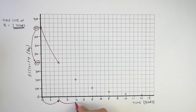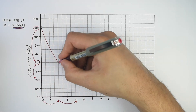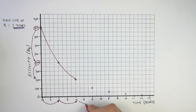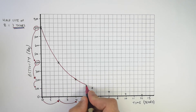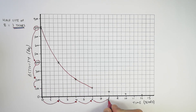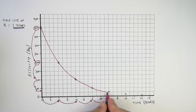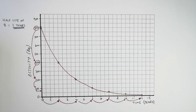Then two years later, from two to four years, the activity decreases from 400 Becquerels to 200 Becquerels. Every half-life, the activity decreases by half. Between four and six years, the activity decreases from 200 to 100 Becquerels. From six to eight years, it decreases from 100 to 50 Becquerels. And the final half-life shown — between 10 and 12 years — the activity decreases from 50 Becquerels to 25 Becquerels.